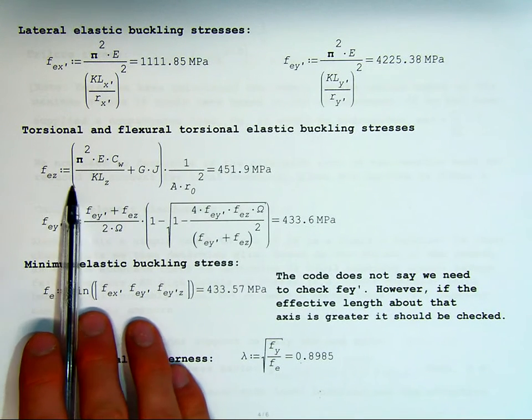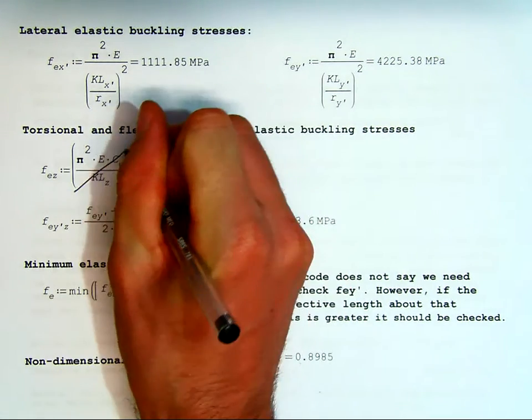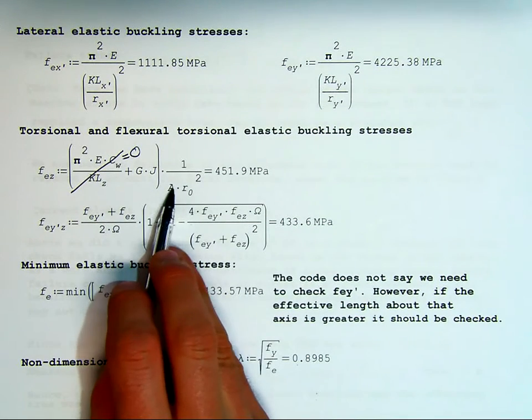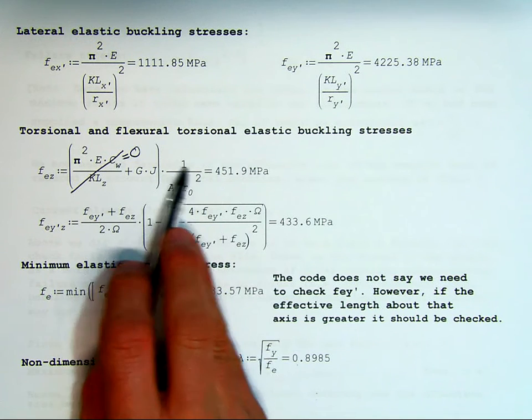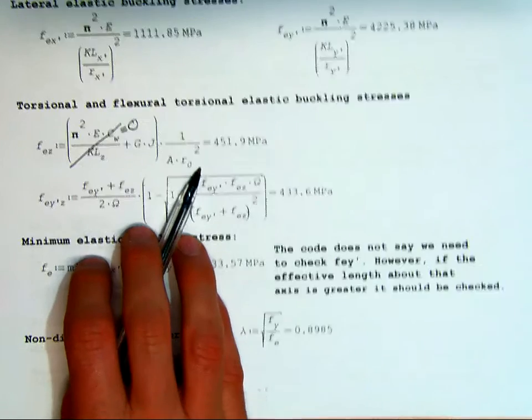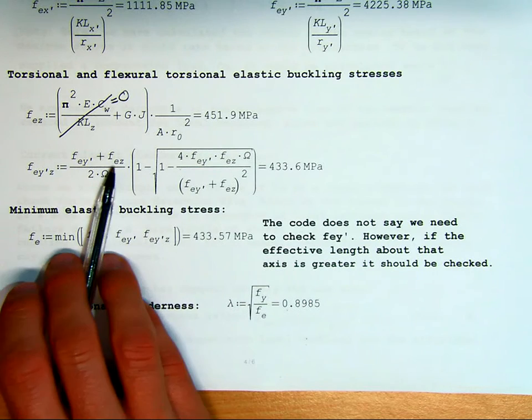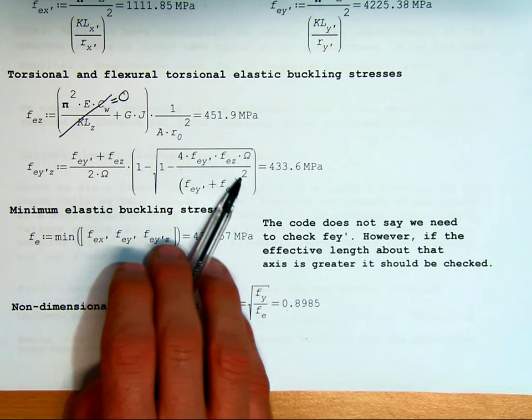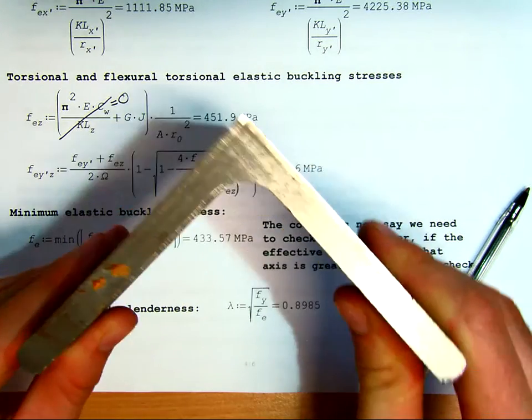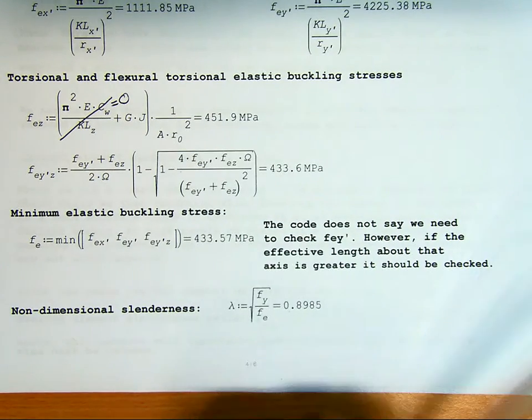Then we get our torsional and flexural torsional. We first have to calculate our torsional. So this is what stress would we have to put on the section to cause it to twist. This term basically disappears because Cw is approximately 0. So our GJ/Ar₀² value governs and we get a value of a buckling stress when it's loaded. These values then get plugged into a further equation to get our lateral torsional buckling stress. Quite a long equation, but ultimately it gets what stress do we need to load until it twists and fails at the same time.